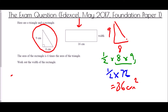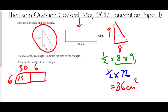Using our formula: a half times the base of 8 times the height of 9. 8 times 9 is 72, and a half of 72 is 36 centimetres squared for the triangle. The rectangle must have an area 6 times bigger than 36, so we work out 6 times 36. Using the grid method: 6 times 30 is 180 and 6 times 6 is 36, giving a total of 216 centimetres squared.